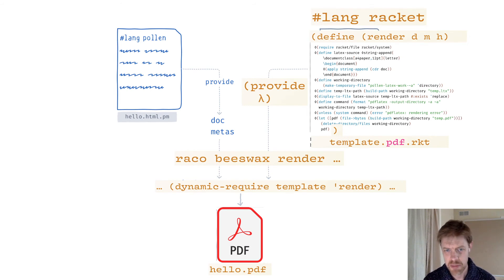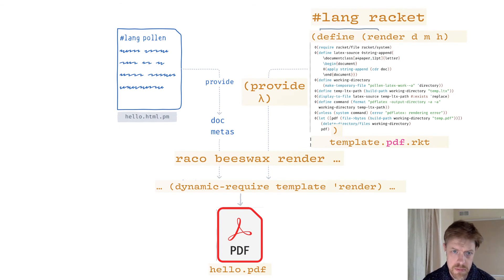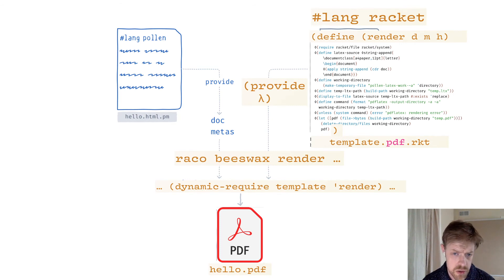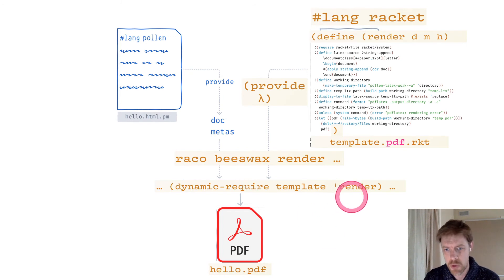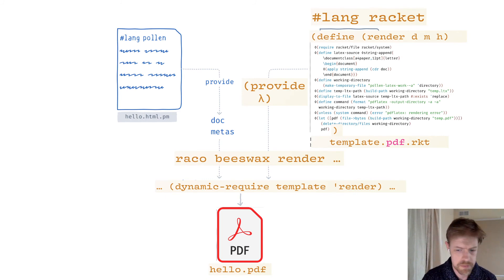Another aspect of this whole framework is that, talking more about the general purpose possibilities, if you were not even using Pollen at all, you could simply use Beeswax template modules and use their render functions to produce the documents that you're interested in.